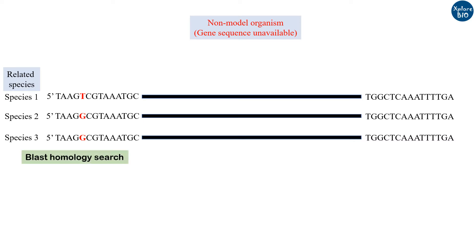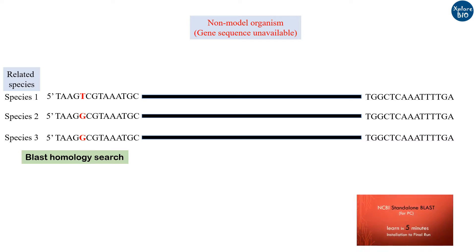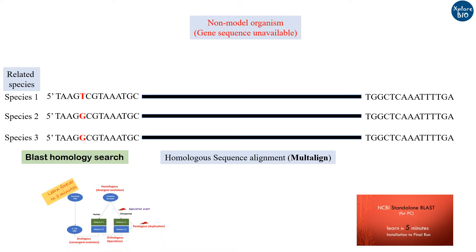I have made a separate tutorial on how to perform a BLAST — you can watch it later. Next, these sequences are aligned using software like Clustal Omega or Multiline. The sequence of a gene in different organisms is known as orthologous or homologous sequences. If you want to know about orthologous and homologous sequences, do watch my video given in the description below.